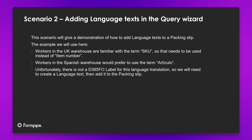So we will add a language text in the query wizard. Just to give a little bit more detail on the scenario: workers in the UK warehouse are familiar with the term SKU, so that needs to be used instead of item number. And workers in the Spanish warehouse would prefer to use the term Articulo. Unfortunately there is not a Dynamics 365 Finance and Operations label for this language translation, so we will need to create a language text and then add it to the packing slip.